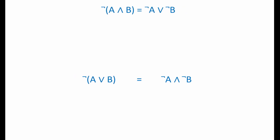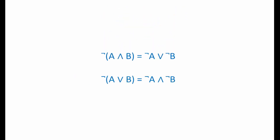De Morgan's theorem is extremely useful when simplifying complex expressions, because it lets us change an AND operator into an OR operator, or vice versa. An expression that contains only ANDs, or only ORs, is often much easier to simplify using the other laws of Boolean algebra. De Morgan's theorem also allows us to adjust the influence of a NOT operator. A NOT operator that's acting on only one variable, rather than a complex term, is easier to handle when it comes to simplification.